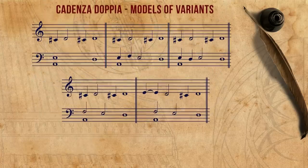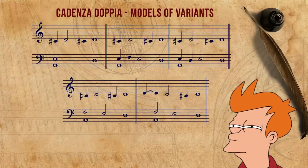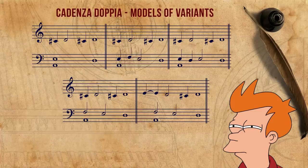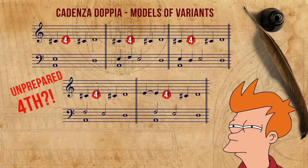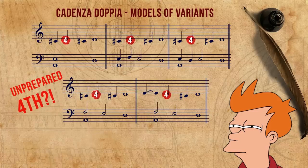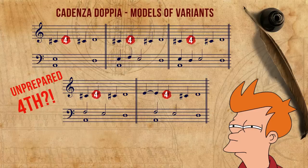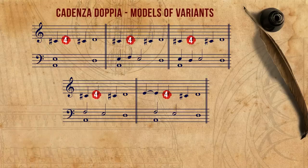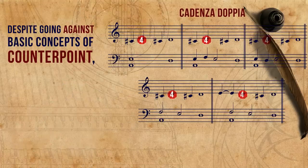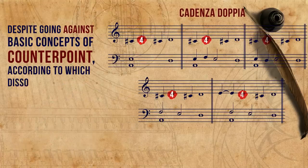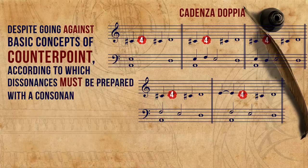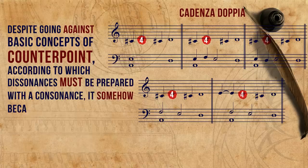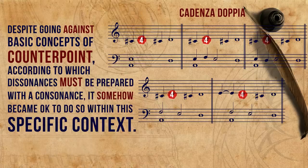On a contrapuntal level, one may look at the models and wonder: why is it okay for the cantizans to introduce an unprepared dissonance — the 4th — and then use it as if it were prepared? As if the dissonance prepares itself? This is a very good question. The answer, however, is rather disappointing. Despite going against basic concepts of counterpoint, according to which dissonances must be prepared with a consonance, it somehow became okay to do so within this specific context.